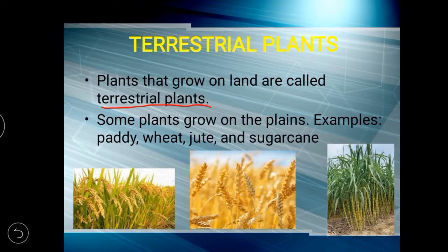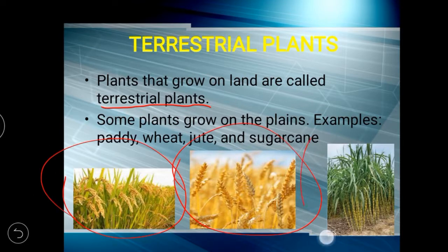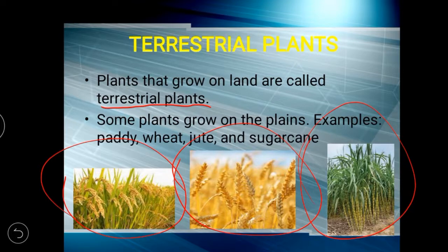Some plants grow on plains — a plain land area. Examples are paddy, wheat, jute, and sugarcane. Have you seen some farm areas? The land should be plain. Some plants grow on hills. There are some plants in hilly areas. Examples are tea, coffee, vine, pine, and willow plants.